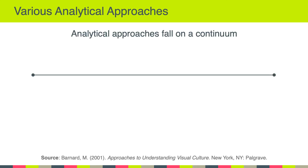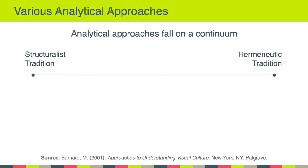Callow helped us understand that there are various approaches to analyzing and thinking about images and visual culture. Drawing on the work of Barnard, Callow argued that all analytical approaches fall on a continuum. This continuum is anchored by the structuralist tradition on one end and the hermeneutic tradition on the other. Some of you may be unfamiliar with these terms, but don't let that vocabulary throw you off — they're really simple ideas in the end. They're really all about how we know what we know and where we derive meaning.